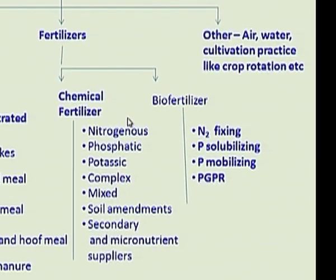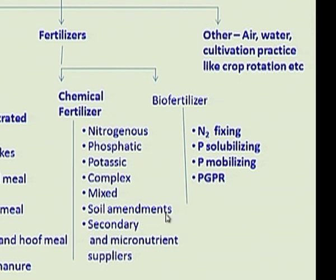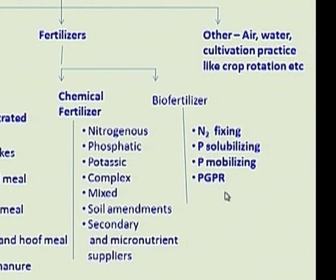Under fertilizers, we can divide into two parts: chemical fertilizers and bio-fertilizers. Chemical fertilizers can be categorized into nitrogenous, phosphatic, potassium, complex, mixed, soil amendments, and secondary and micro nutrient suppliers.